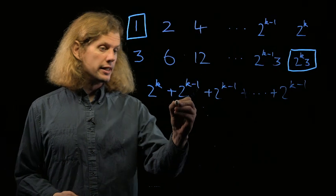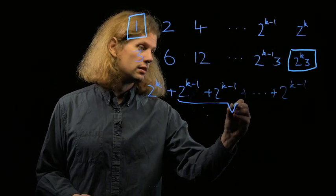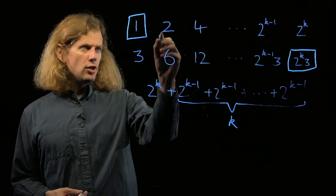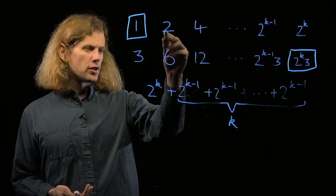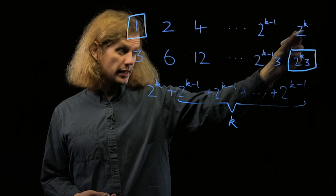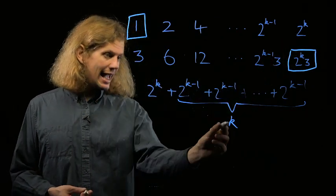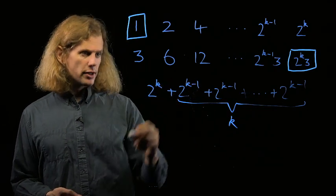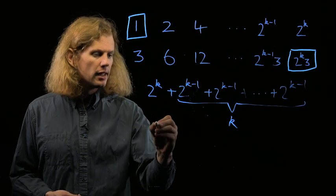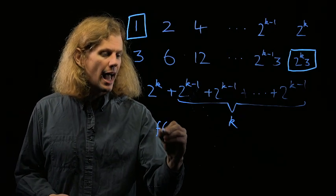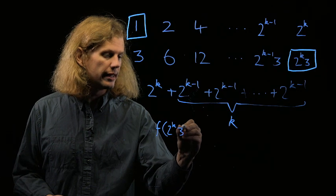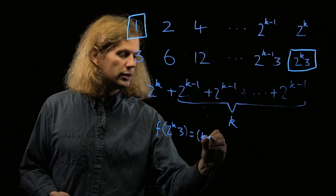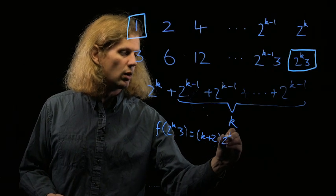In fact, there are k of these terms, one corresponding to each possible last place in the top row from 2 to the 1 up to 2 to the k. So we've got k terms of 2 to the k minus 1, and then two more 2 to the k minus 1's disguised as a 2 to the k. So I can write that as saying that f of 2 to the k times 3 is equal to k plus 2 times 2 to the k minus 1.